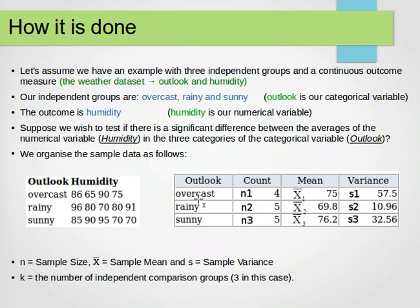We build a simple table for all categories from the categorical variable. We compute the count for each subset: n1 is the count for overcast, n2 for rainy, n3 for sunny. Then we compute the mean for each subset: x̄1 for overcast, x̄2 for rainy, x̄3 for sunny. We also compute the variance s1, s2, s3 for each category's corresponding numerical values. Here n is sample size, x̄ is sample mean, and s is sample variance. We also define k as the number of independent comparison groups — in our case k equals 3.